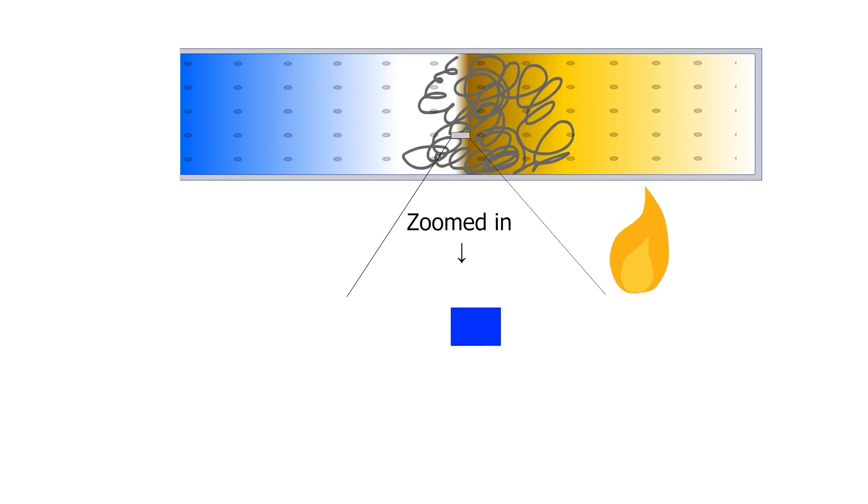So you get pressure waves moving at regular intervals in the tube. If you can put this temperature gradient at just the right spot, then it resonates at the most unstable acoustic mode for this specific tube.